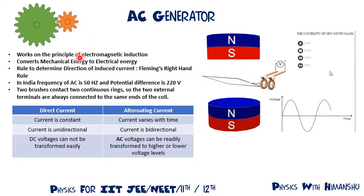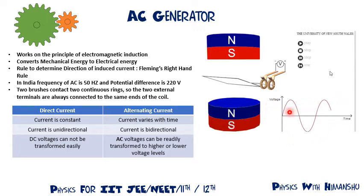You have to remember how an AC generator works: what is the working principle, what kind of energy you are supplying, and what kind of energy it is producing. Then we will come to the numerical part and the equations part. Remember that an AC generator produces alternating voltage.